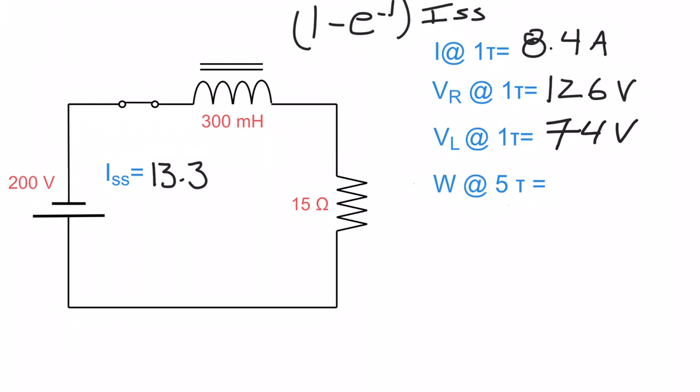This same approach works for any tau. If I wanted to figure out the voltage at the second tau, I'd work out the current at the second tau, multiply by the resistance to get the resistive voltage, then subtract that from the source voltage to get the inductor voltage.